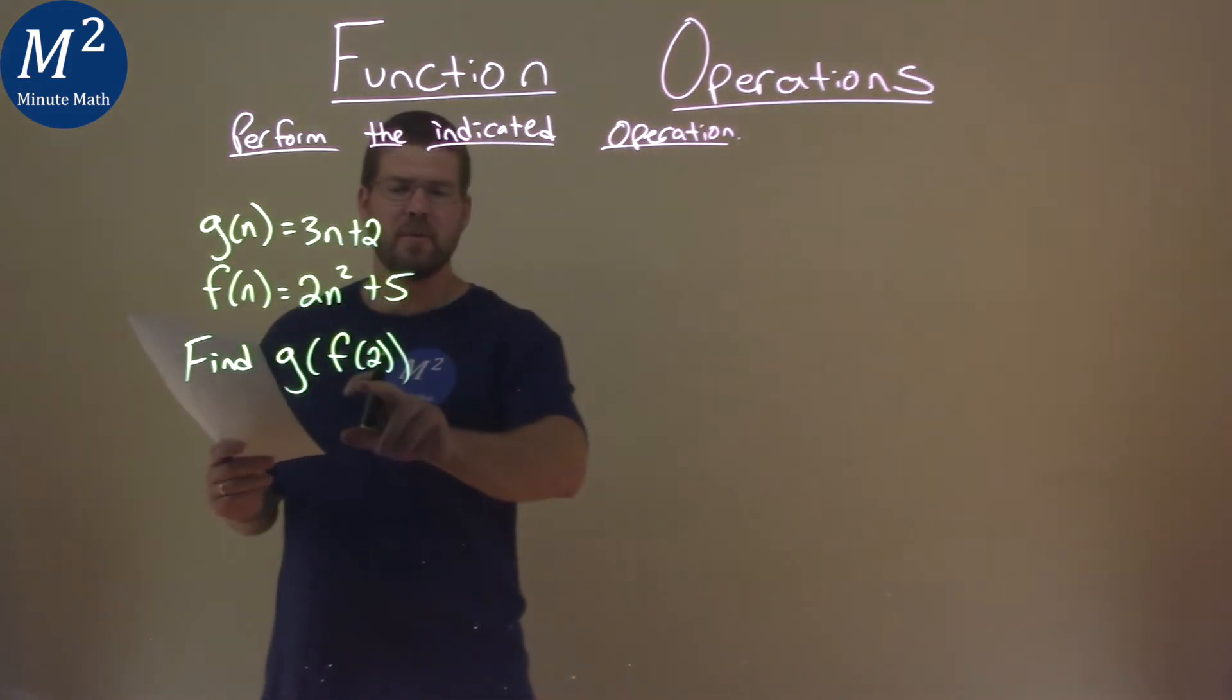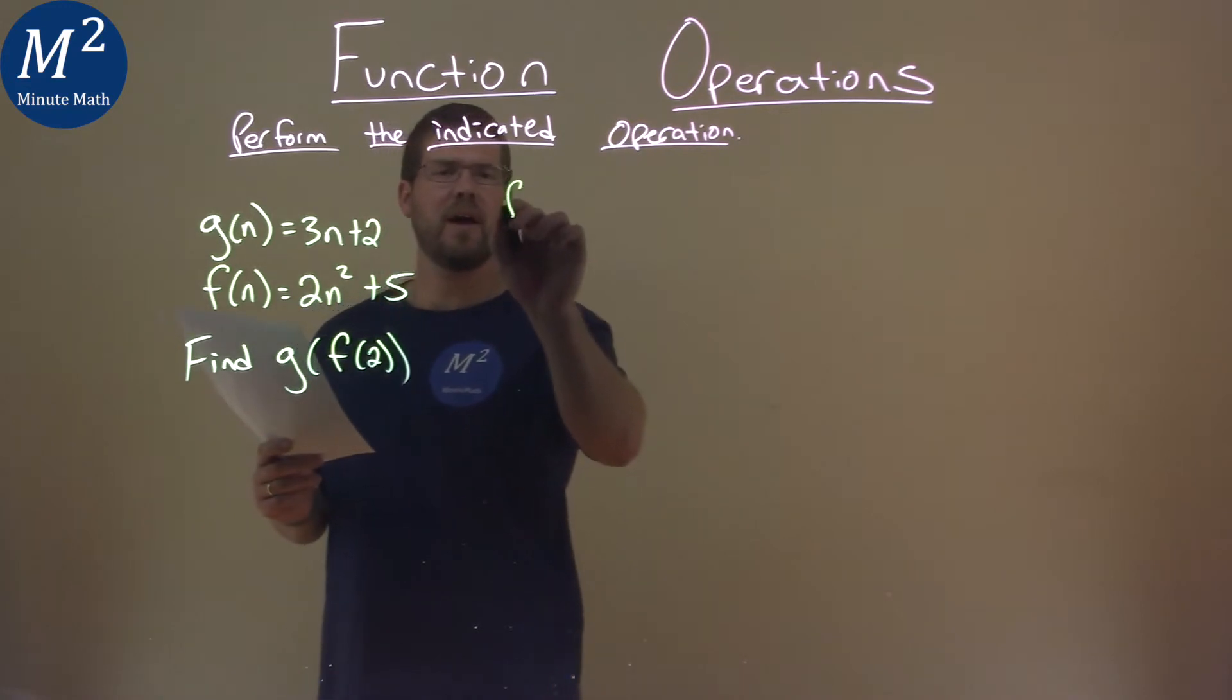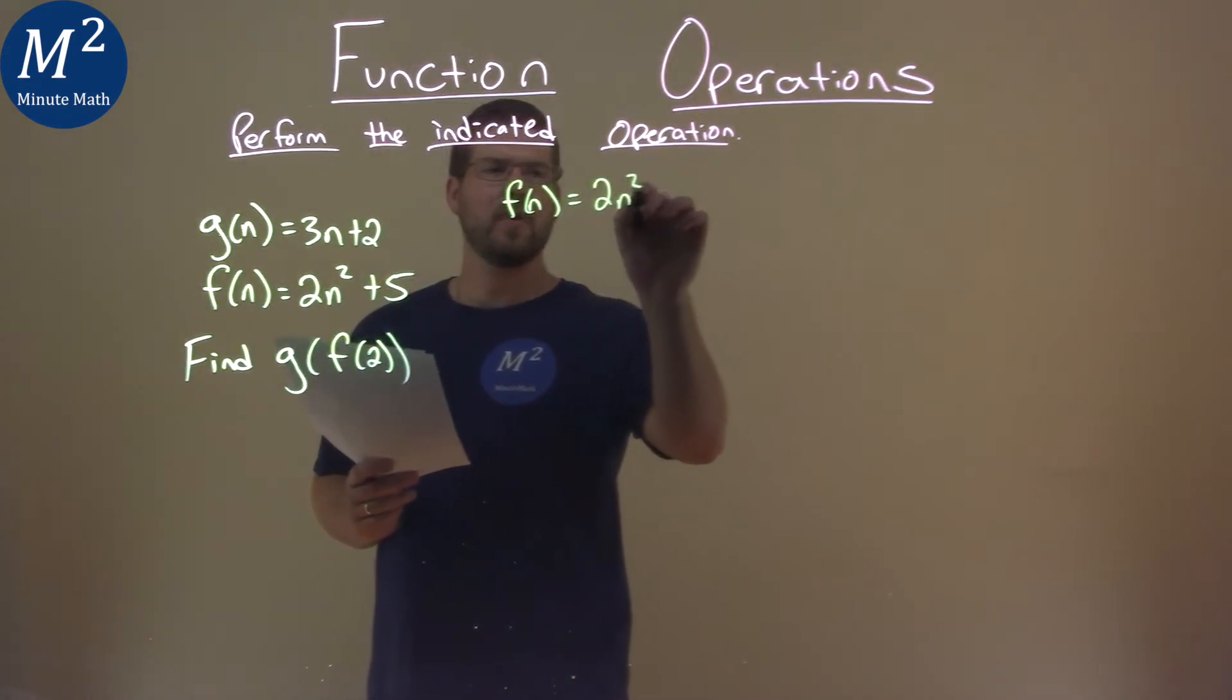First, I'm going to deal with f(n). We know f(n), as we just stated, is 2n² + 5.